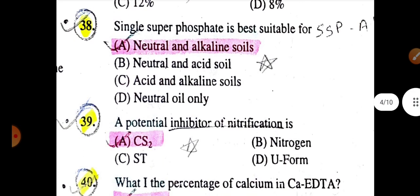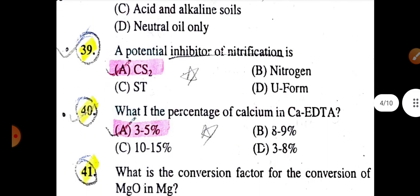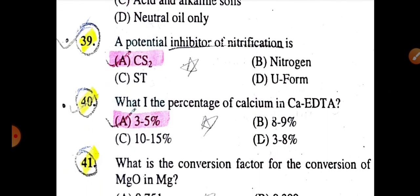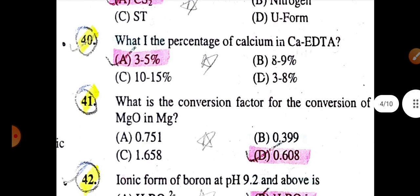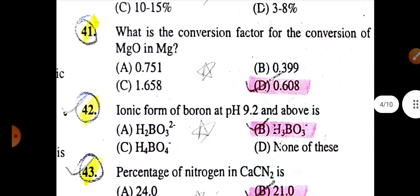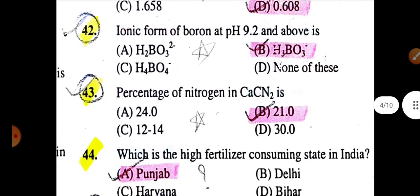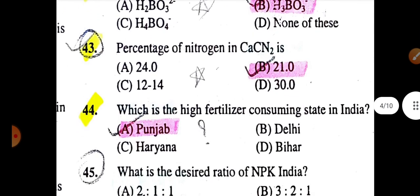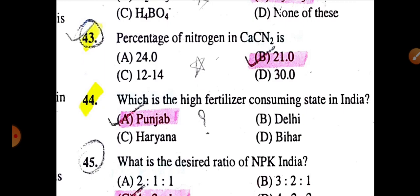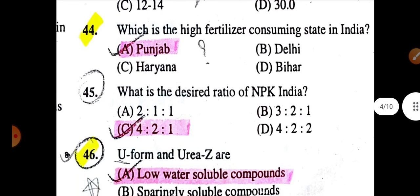Single superphosphate is best suitable for neutral and alkaline soil. A potential inhibitor of nitrification is CS2. What is the percentage of calcium in CaEDTA is 3 to 5%. What is the conversion factor for converting MgO to Mg is 0.608. Ionic form of boron at pH 9.2 and above is H3BO3. The percentage of nitrogen in calcium cyanamide is 21%. Which is the highest fertilizer consuming state in India is Punjab.